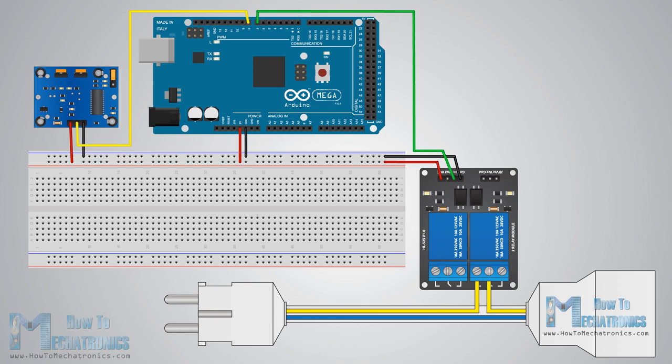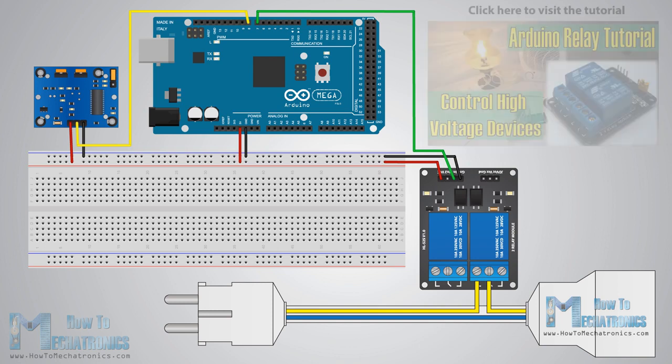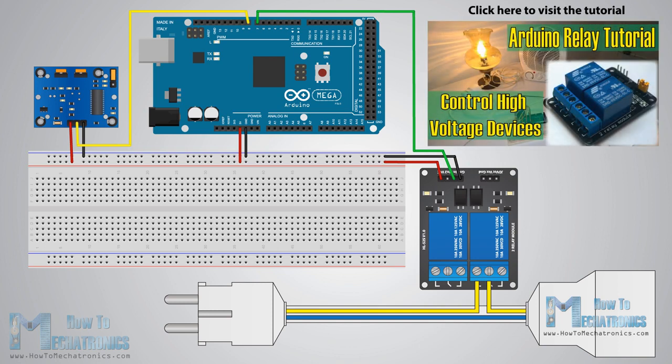The output pin of the sensor will be connected to pin number 8 on the Arduino board. When an object is detected, pin number 7 will activate the relay module and the high voltage lamp will turn on. For more details how the relay module works, you can check my Arduino relay tutorial.